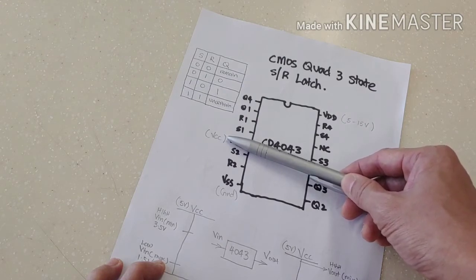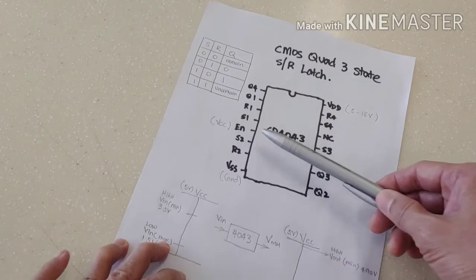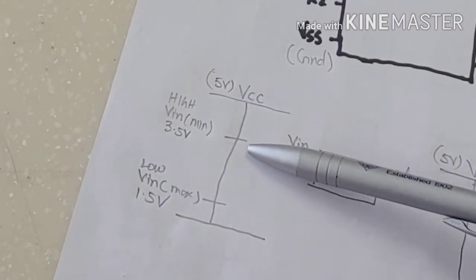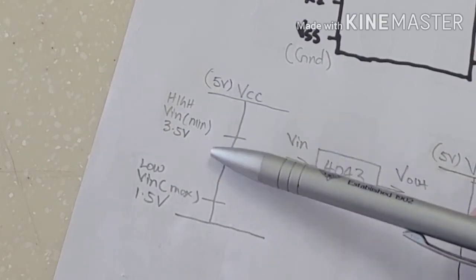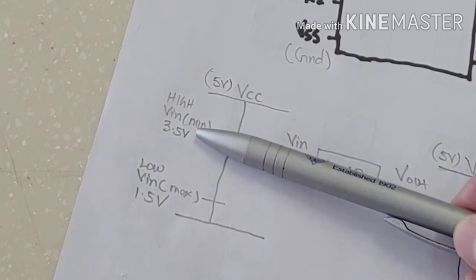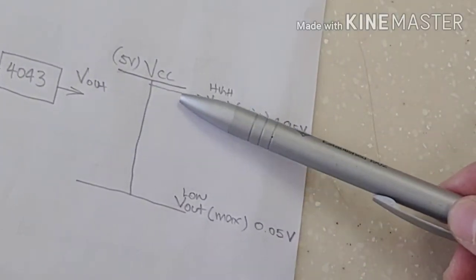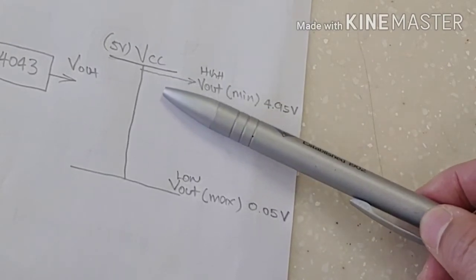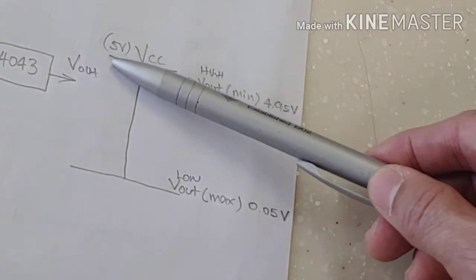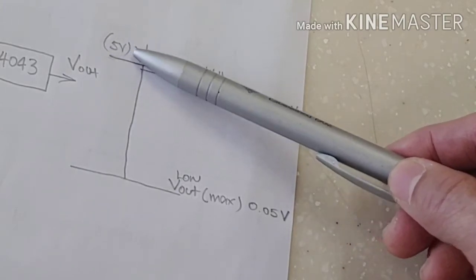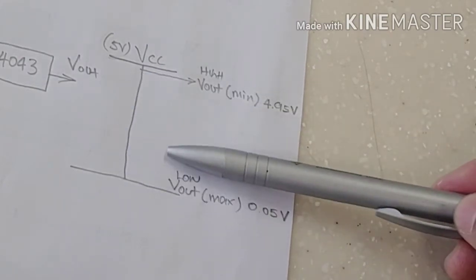Just a couple of things to take note. The minimum high voltage it recognizes is 3.5 volts, and I'm talking about a 5 volt input. The maximum that it recognizes as a low is 1.5 volts. The output that it gives is a very nice output. The minimum high output it gives is 4.95, so it gives a very close 5 volts. The maximum low is almost close to 0.